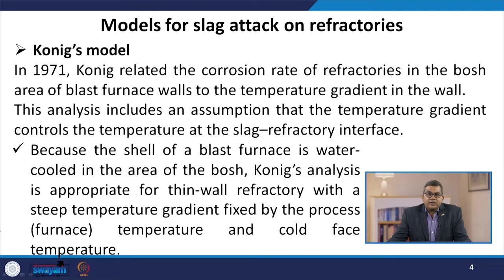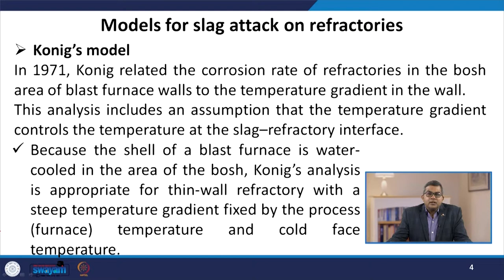The first model for slag attack on refractories is Koenig's model. In 1971, Koenig related the corrosion rate of refractories in the Bosch area of the blast furnace wall to the temperature gradient in the wall. This analysis includes the assumption that the temperature gradient controls the temperature at the slag-refractory interface.